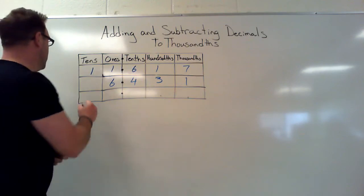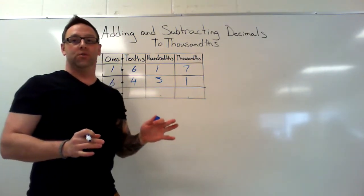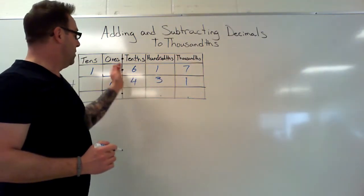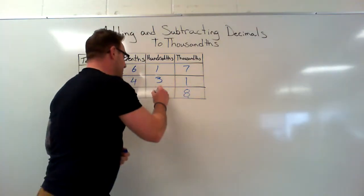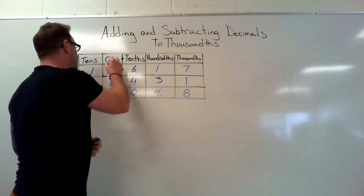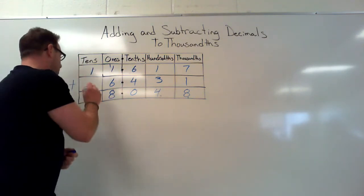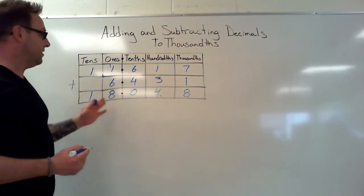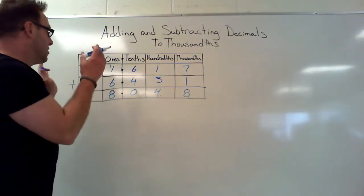I'll put the plus sign here and we're going to add these numbers. The first thing you want to do when adding decimals is line up the decimal point — we've done that. Seven plus one is eight, one plus three is four, six plus four is ten, carry the one, one plus one is two plus six is eight, and one plus nothing is one. Our answer is eighteen point zero four eight — same digits as before when we had eighteen thousand and forty-eight.